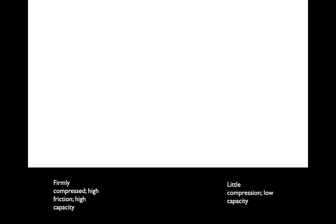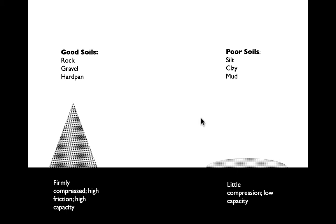One way we assess this is the slump test: we excavate a little soil, pile it up, and see what it does. If the soil flows — if it's silt, clay, or mud — the slump test goes poorly; the soil slumps and spreads out, telling us we can't put much weight on it. If instead the soil holds a pyramidal shape, it's a good foundation soil — something like rock, gravel, or hardpan, which is organic soil compressed over thousands of years into a very stiff clay. Those soils have good bearing capacity; the particles lock together and form a monolithic base.